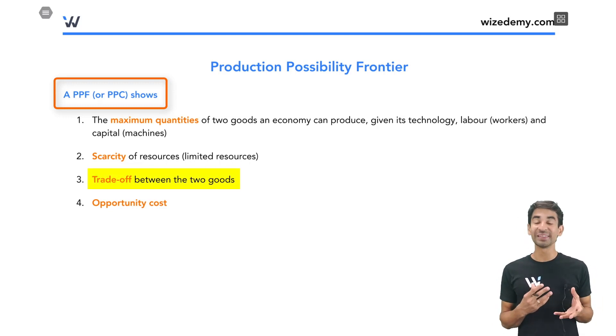And trade-off and opportunity cost are basically the same thing. Trade-off means that in order to make more of one good, you have to make less of another. You have to give up something. And how much do you have to give up? That's called the opportunity cost. So trade-off means you have to give up something. Opportunity cost means how much of that other thing do you have to give up?